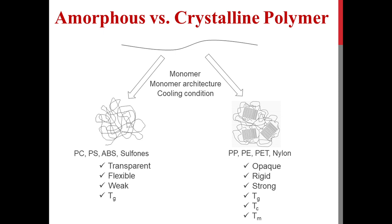Strength is another big difference between amorphous and crystalline polymers. Crystalline polymers are usually stronger than amorphous polymers, so whenever polymer parts are required to bear load, crystalline polymers are preferred — examples are ropes and fabric made from PET. Some amorphous polymers are also very tough, like polycarbonate, so amorphous polymers are used in applications where impact strength is important, such as phone cases and displays made of polycarbonate.